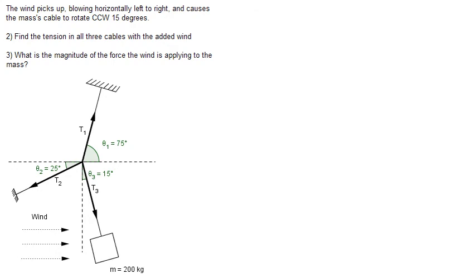In part two, the wind picks up, blowing horizontally from left to right, and causes the mass's cable to rotate counterclockwise 15 degrees. So, the wind blows from left to right, and the mass moves up toward the right a little bit. Find the tension in the three cables with the wind.